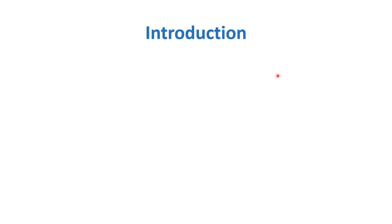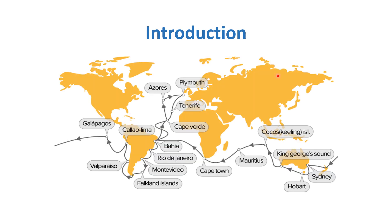Now let's see a map which explains Darwin's journey around different continents of the world. You can see here that his journey started from England. South America's islands are the main concern of this lecture, particularly the Galapagos Islands.